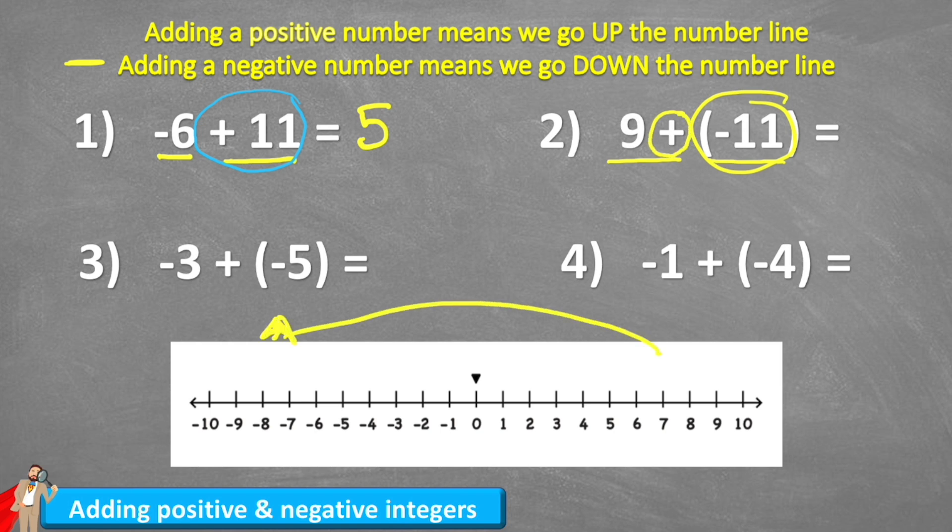So first things first, I'm going to mark my nine on my number line. Here it is. And I'm now going to come 11 jumps back down my number line. Here we go.